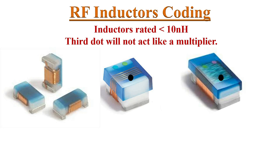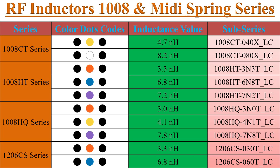It is to be noted that for RF inductors rated lower than 10 nano-Henrys, the third digit does not act as a multiplier — it is also a digit value. The following table shows RF inductor colored dot codes whose values are less than 10 nano-Henrys. You can use this table as a reference.